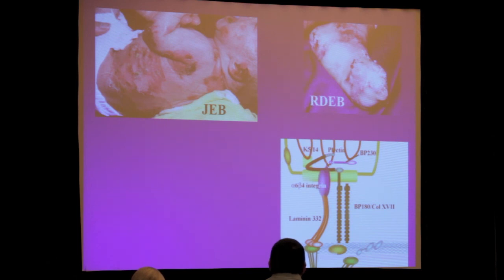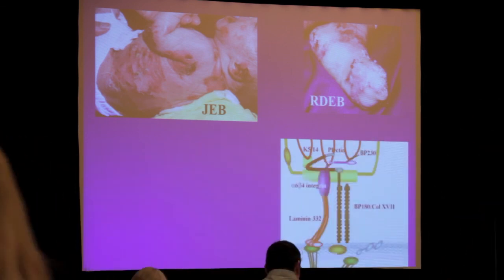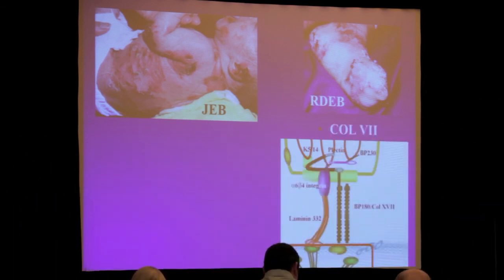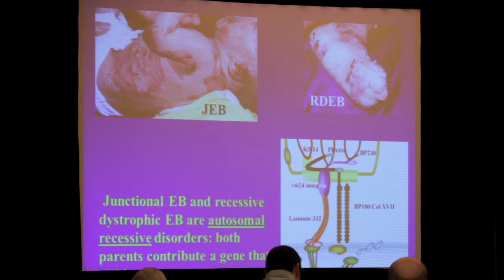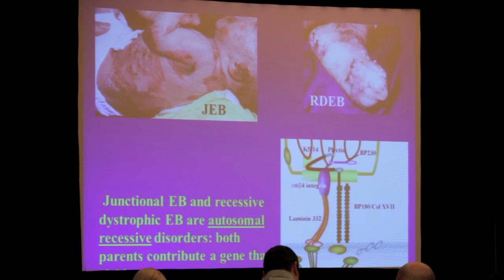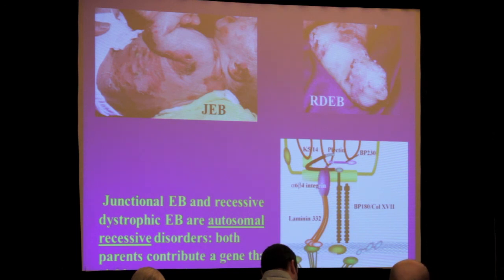Recessive EB and junctional EB are both recessive disorders, generally. Recessive dystrophic EB is due to mutations in collagen-7 where you pretty much don't have any collagen-7, and certainly none that functions very well. These are autosomal recessive disorders. Both parents each contribute one gene — we all have two copies of every gene. The parents each contribute one copy — the abnormal gene — so the parents are called carriers. They have one normal gene and one abnormal or mutant gene. Having that combination in the case of a recessive disorder leads to no abnormality that's seen.